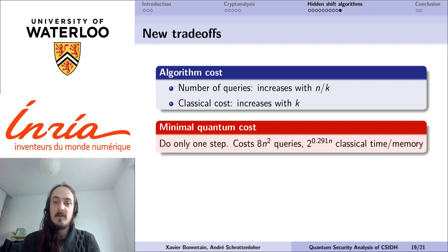If we want to have a really low quantum cost, as low as possible, then we can reduce this algorithm to only one step. In this case we would have a very small number of required quantum queries, so only a quadratic amount, but the classical cost will be exponential with the exponent of subset sum, so 2 to 0.291 at the time of the paper, in time and memory.